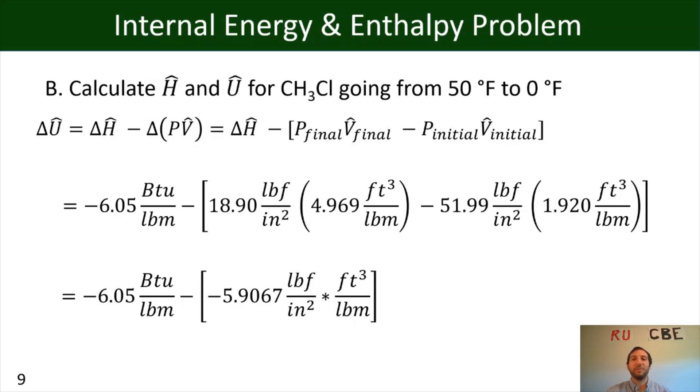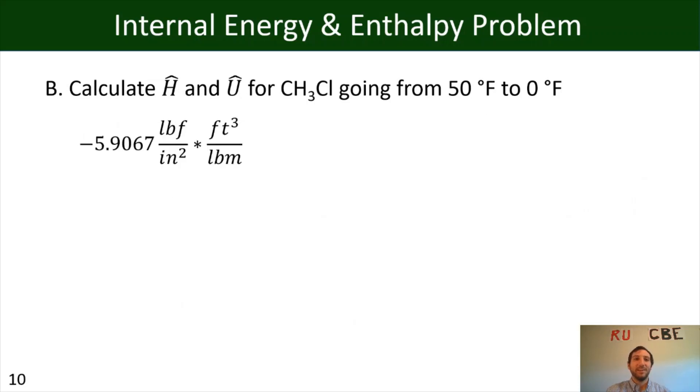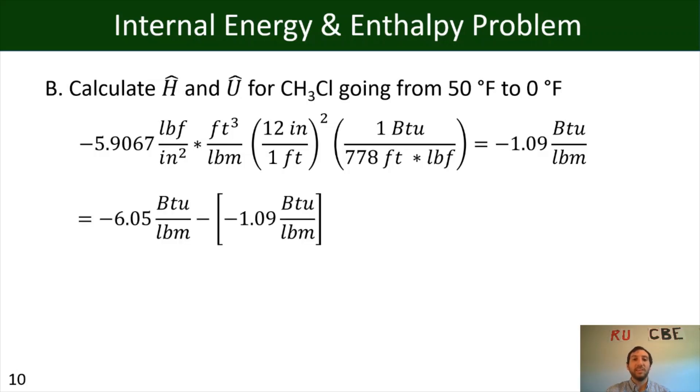And that's where our unit conversions are going to come in handy. So for here, we're going to multiply by, we're going to convert from our inches to feet, and we're going to convert from BTUs to foot times pound force, or rather, we're going to convert from foot times pound force to BTUs. And after doing all these conversions, we will get that we have negative 1.09 BTUs per pound mass. So if we combine all this together, we are going to get a change in specific internal energy of negative 4.96 BTUs per pound mass.